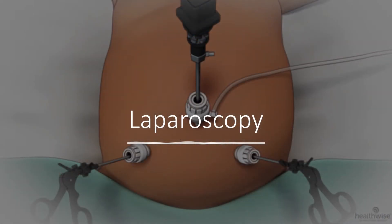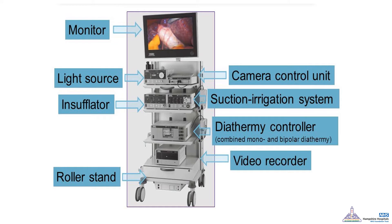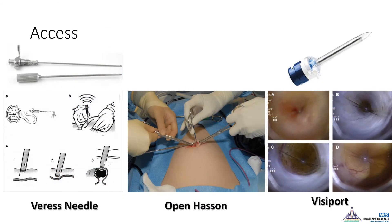Laparoscopy basic principles are important for every urologist to know. The stack is usually formed of a monitor, camera control unit, light source, insufflator system, and video recording machine. The access approach varies according to the operation, surgeon skills, and approach used. The Veress needle is used in the transperitoneal approach, puncturing the abdominal wall with a spring-loaded needle and testing entrance to the peritoneal cavity before starting inflation. The Visiport system is commonly used nowadays, with the camera going into a port to see where the port has been inserted. The Hasson technique is used to make a visual incision through the abdominal layers to reach the required space.